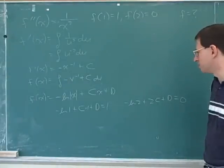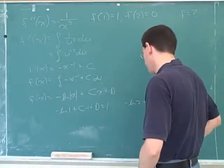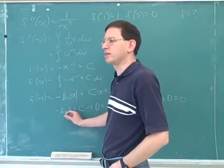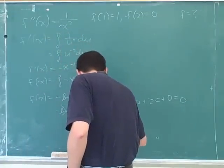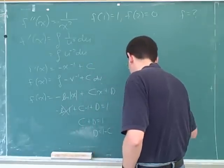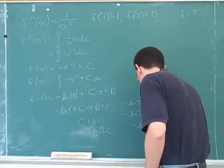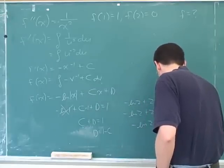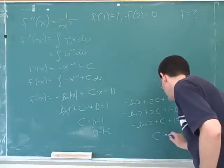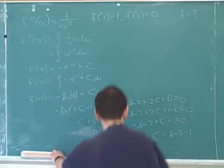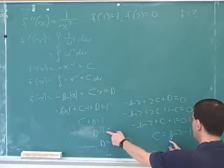And now this is an algebra problem of two equations and two unknowns. I guess I would solve a simpler equation — this equation simplifies because the log of 1 is 0. So this becomes c plus d equals 1, or d equals 1 minus c. So this is negative natural log of 2 plus 2c plus 1 minus c equals 0, and we get c equals natural log of 2 minus 1. And we get d by putting this into the first equation.